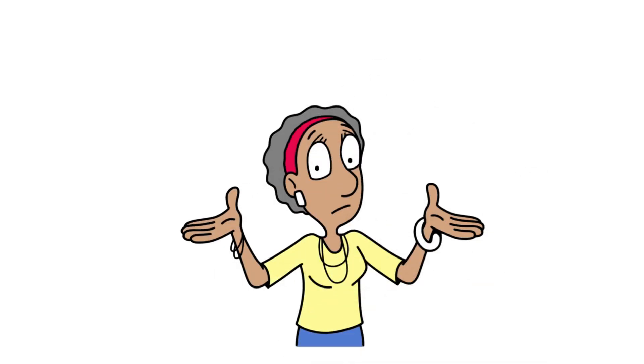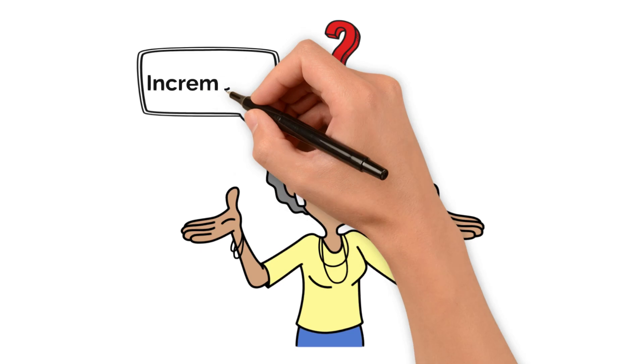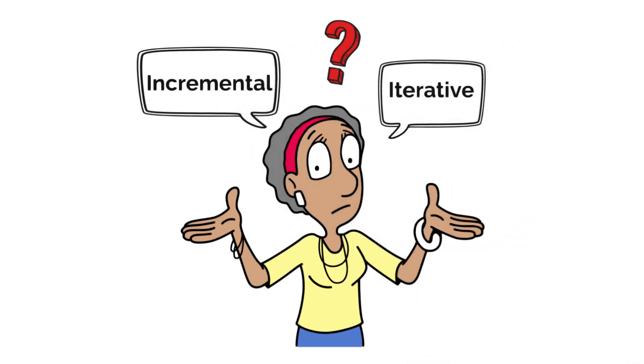How do you decide whether to build a product piece by piece or improve it gradually over time? Today we're breaking down the incremental and iterative models in project management to help you decide when to use each one.